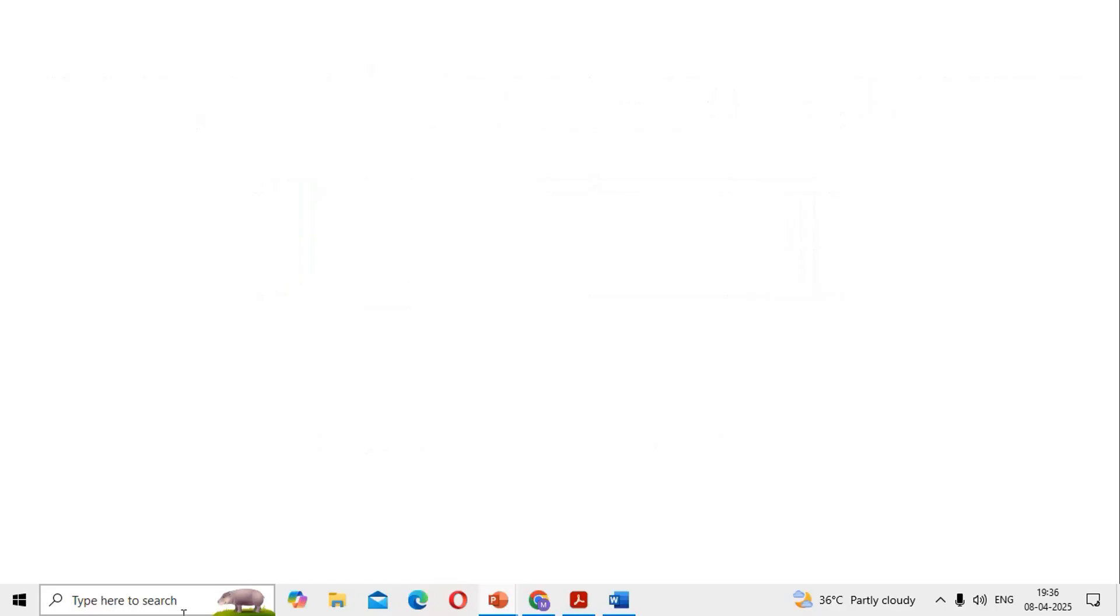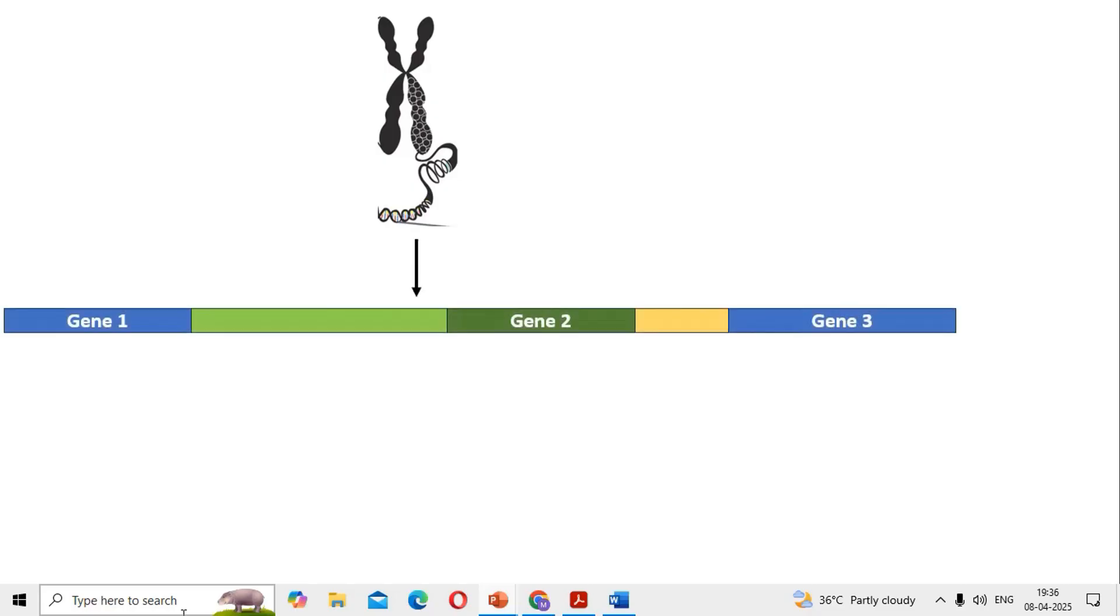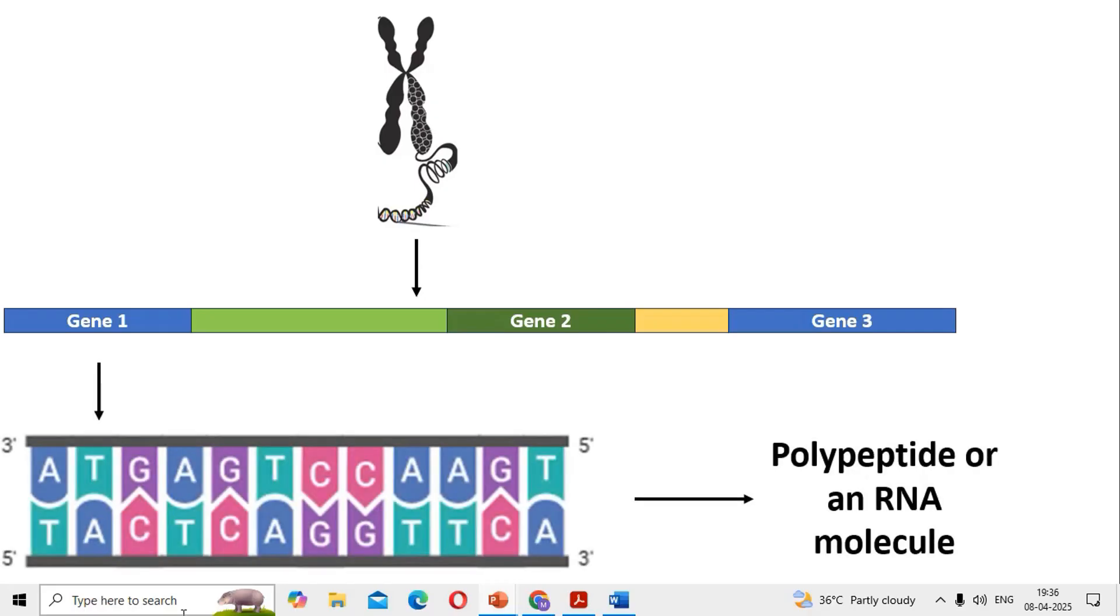Let us go a little bit further. In higher organisms, DNA molecules are arranged in chromosomes. A chromosome is a long DNA molecule that contains many genes and each gene is a small DNA sequence giving rise to a polypeptide or an RNA molecule. It means a chromosome is containing so many particular DNA sequences called genes.